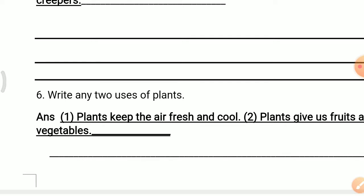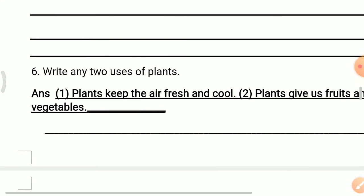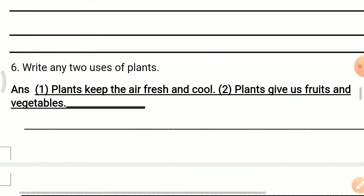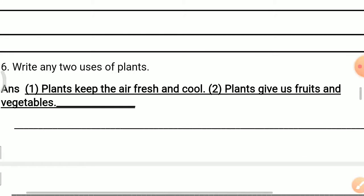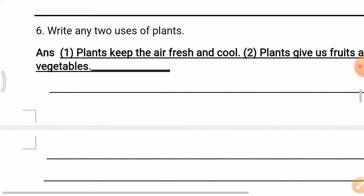Question 6: Write any two uses of plants. Answer: One — plants keep the air fresh and cool. Plants keep the air fresh and cool. Two — plants give us fruits and vegetables.